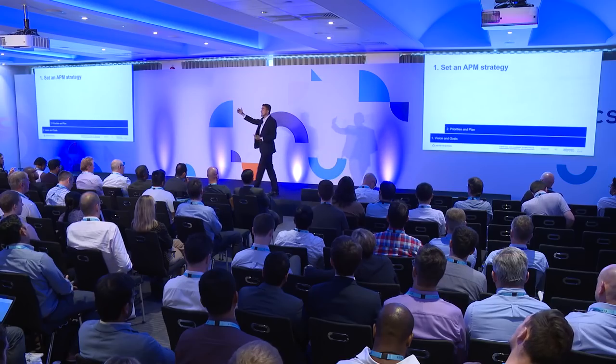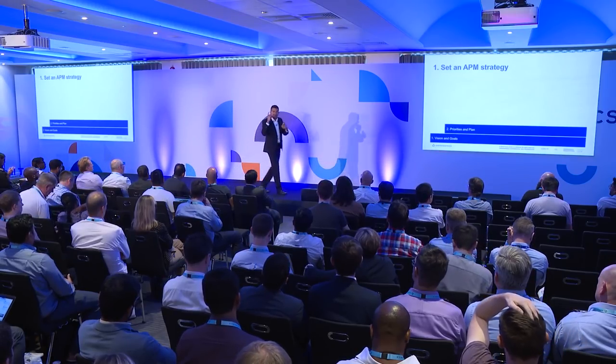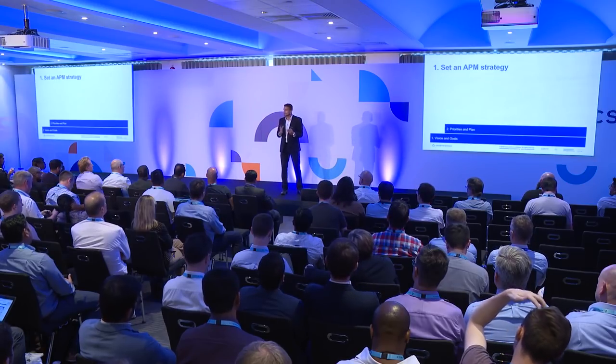The second thing is about priorities. What do we need to do first? Enterprise applications have environments — development, pre-production, and production. You need to think about the order. I remember at the bank we had development and pre-production set up but hadn't yet configured the production environment. You need to think about what comes first and have a plan.